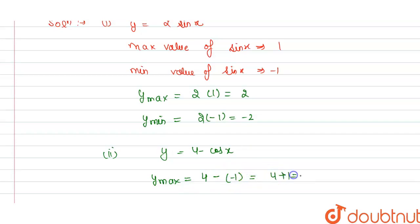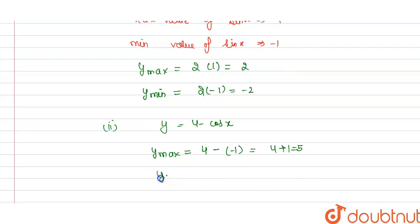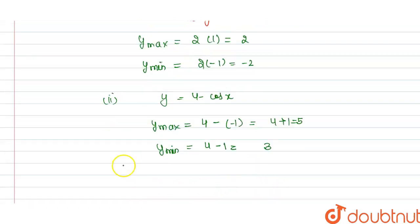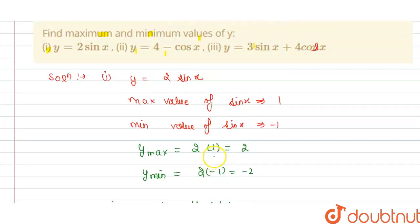4 plus 1, that is 5. And y minimum is when minimum value of cos x is 1, so this is 3. Now we solve for the third part, y maximum or y minimum.